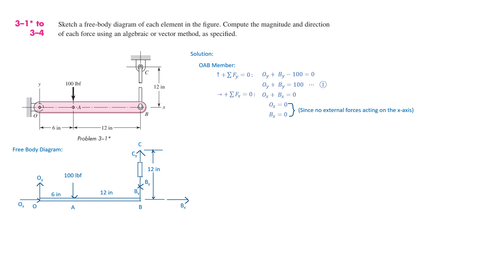Next, we consider the X axis, assuming rightward is positive. Ox is going right — positive. There's nothing on A. On B, there's Bx. So, Ox plus Bx equals 0, meaning Ox equals 0 and Bx equals 0. This is because there are no external forces acting in the X direction — as we can see in the original diagram, only 100 LBF acts in the Y direction. That's why Ox and Bx equal 0, and that's also why Cx is 0.